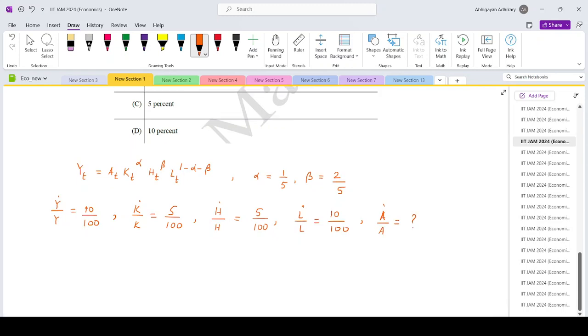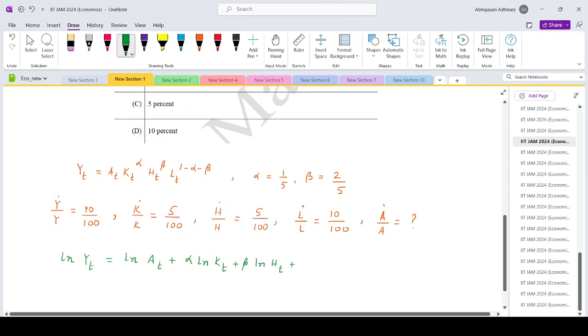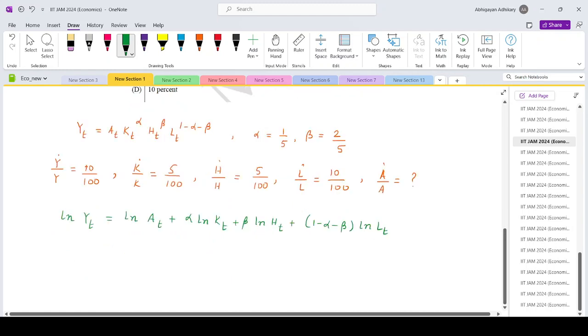We can first start by taking log of the production function, so log y_t equals log a_t plus alpha log k_t plus beta log h_t plus 1 minus alpha minus beta times log l_t.